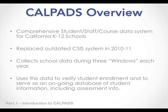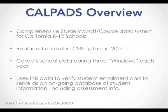Basically, CALPADS is the system for collecting enrollment information, student demographic information, even parent data and federal program and state program data for K-12 students in California. It replaced the old CSIS system and it's still in the process of being developed. They've added the assessment document component, which is still in development, but we'll talk a little bit about that as we go through the lesson.